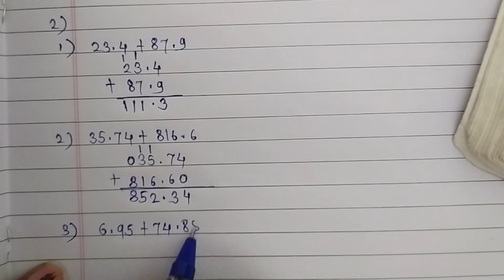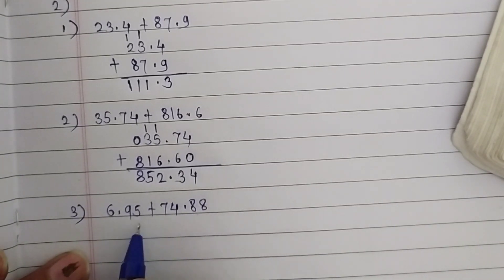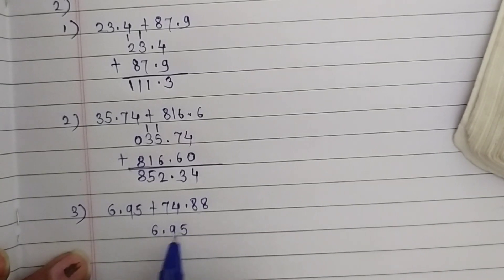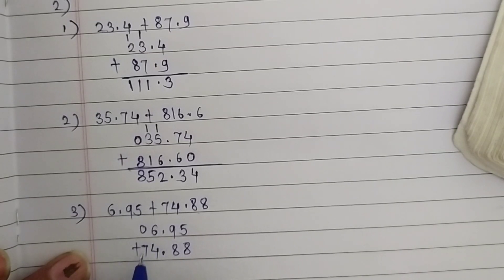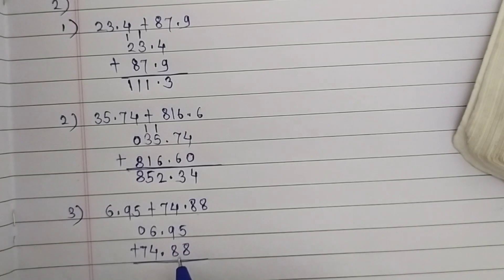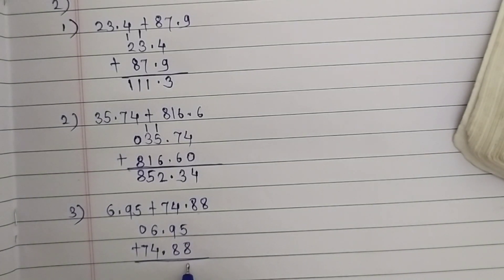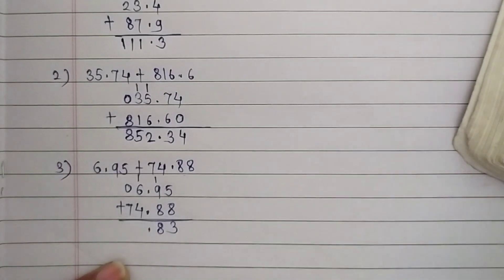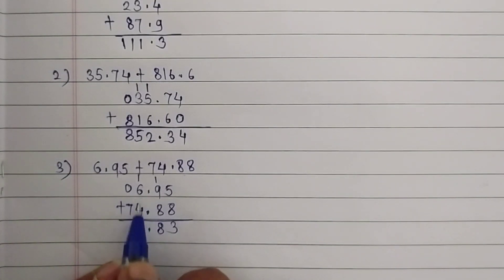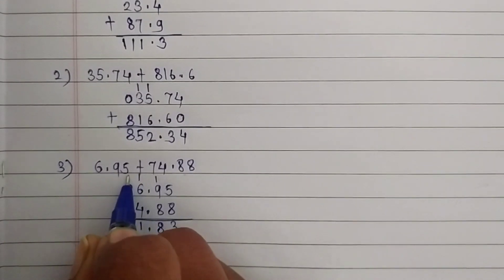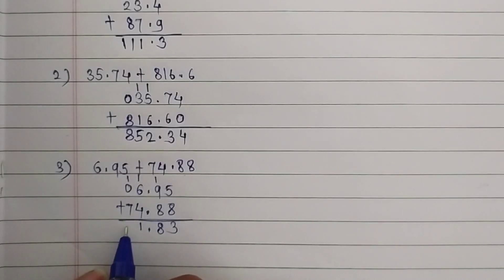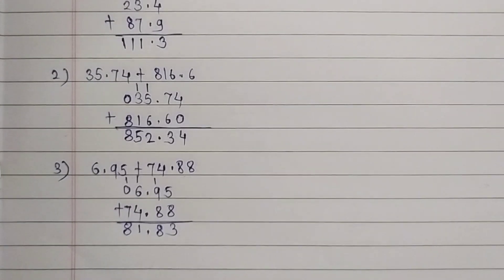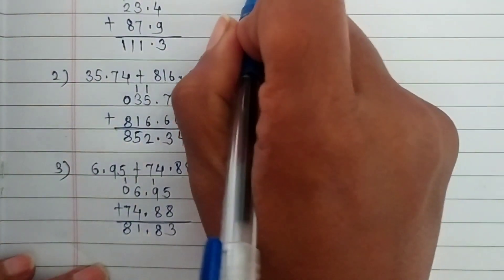The third question is 86.95 plus 74.88. Arrange them. 5 plus 8 is 13, carry 1. 9 plus 8 is 17 plus 1 is 18, carry 1 — place the decimal point. 6 plus 4 is 10 plus 1 is 11, carry 1. 8 plus 7 is 15 plus 1 is 16. The answer is 161.83.